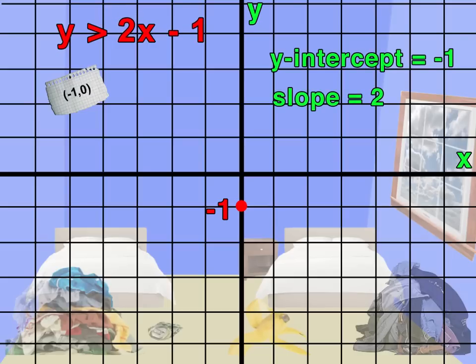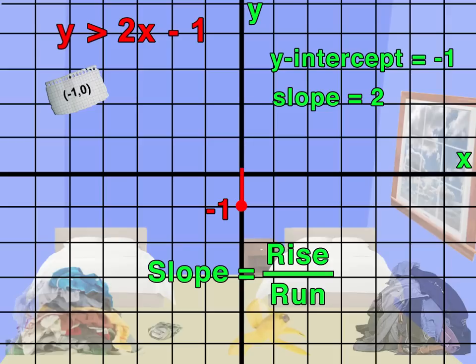The slope of the line is 2. We know that slope is rise over run, so we can rise two units on the y-axis and run over one unit to the right.